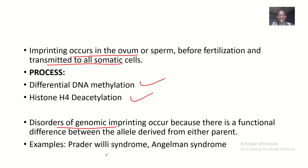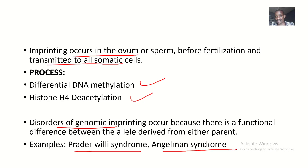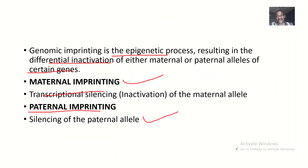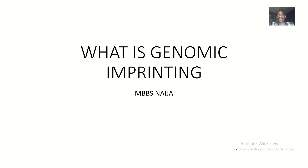Examples of medical conditions involving genomic imprinting include Prader-Willi syndrome and Angelman syndrome. I have videos coming on each of those syndromes, so stick to my YouTube channel — I'll see you guys pretty soon. Thank you.